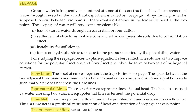Next we are going to see the flow net. The flow net is nothing but the entire pattern of flow lines and equipotential lines, referred to as the flow net. Thus a flow net is a graphical representation of head and direction of seepage at every point.